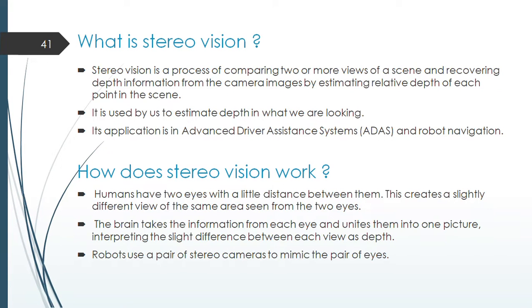What is stereo vision? Stereo vision is a process of comparing two or more views of a scene and recovering depth information from the camera images by estimating relative depth of each point in the scene. It is used by us to estimate depth in what we are looking. Its application is in advanced driver assistance system ADAS and robot navigation.